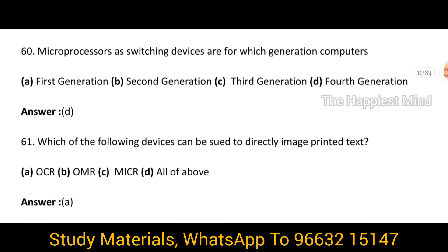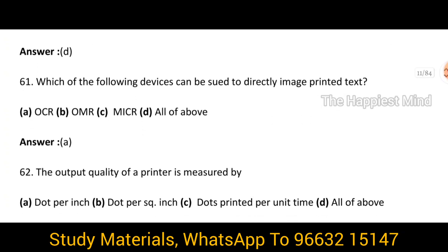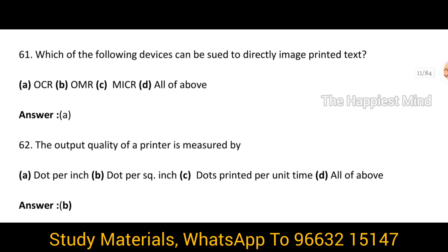Question 60: Microprocessors as switching devices are for which generation of computers? The answer is option D, the fourth generation. Question 61: Which of the following devices can be used to directly image printed text? It is option A, OCR.